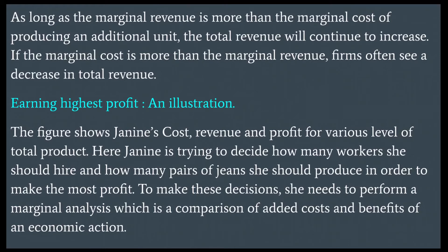Earning the highest profit — an illustration. The figure shows Janine's cost, revenue, and profit for various levels of total product. Janine is trying to decide how many workers she should hire and how many pairs of jeans she should produce in order to make the most profit. To make these decisions, she needs to perform a marginal analysis, which is a comparison of the valid costs and benefits of an economic action.